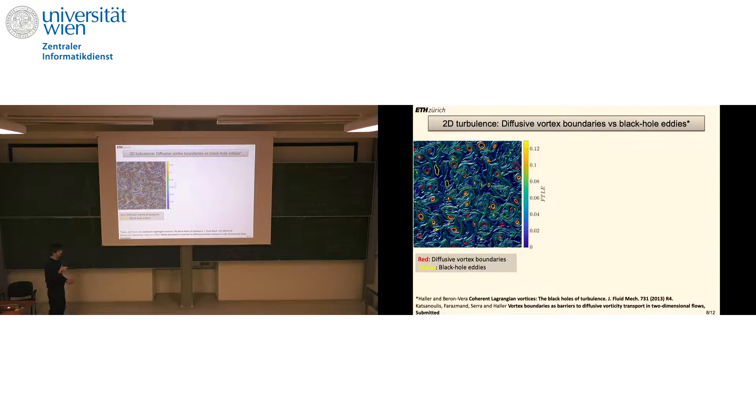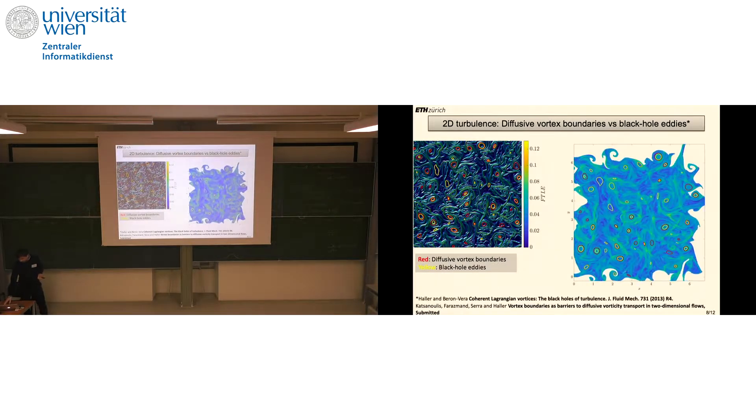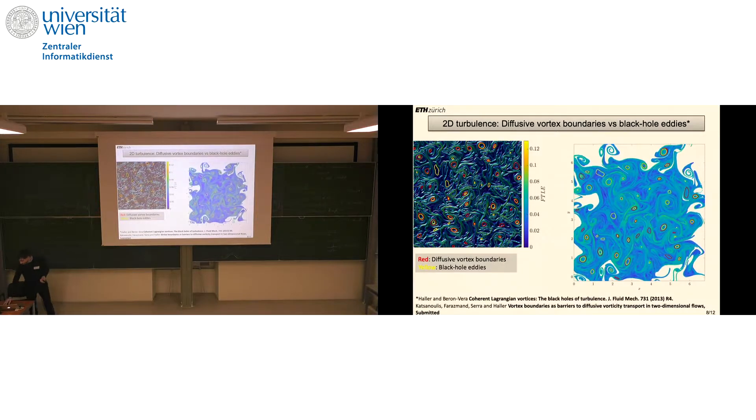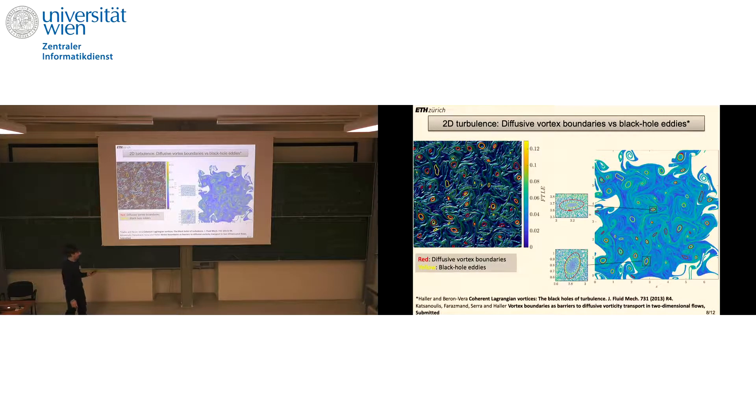With red, we denote the diffusive vortex boundaries I described before. With yellow, we denote the black hole eddies that Javier briefly discussed this morning. I won't get into details about what these black hole eddies are, but I'll loosely say they're constructed as stretching curves. Once advected for the time interval of interest, they should not filament. And indeed, this is what we see here.